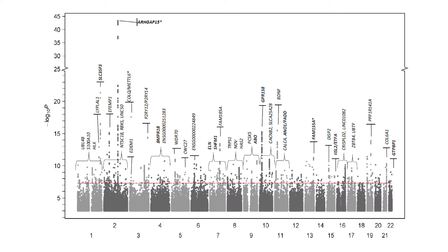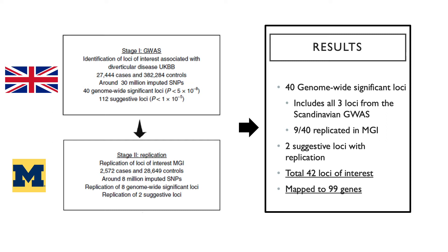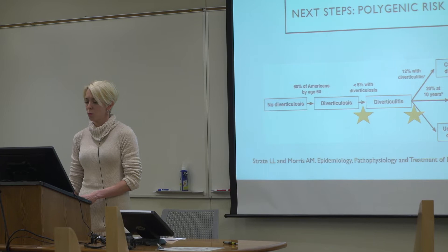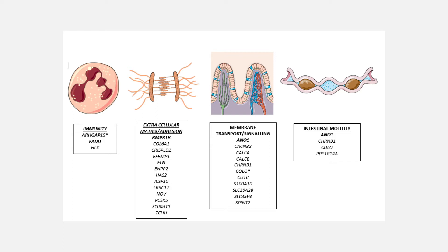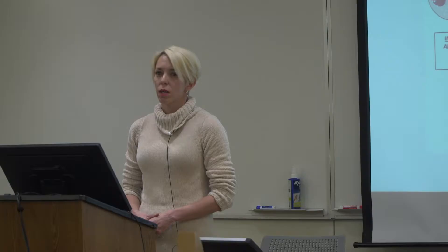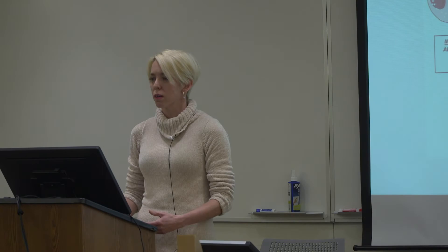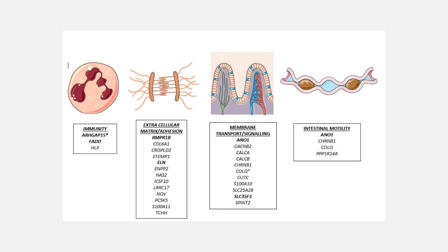You can see our results here. We replicated findings in the Michigan Genomics Initiative — the phenotyping is not exactly one-to-one, and we'll talk about how we're going to surmount that later — but we found replication of nine of our 40 loci within MGI. These 42 loci mapped to 99 genes. Some particularly interesting genes were involved in immunity, the extracellular matrix, membrane transport and signaling, or intestinal motility. Unlike many diseases presented here today, the molecular biology of diverticulitis is essentially in its infancy, having only really been studied for the past five to ten years, presenting many new avenues for further research.